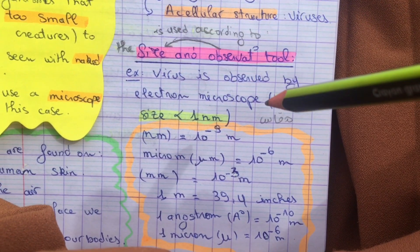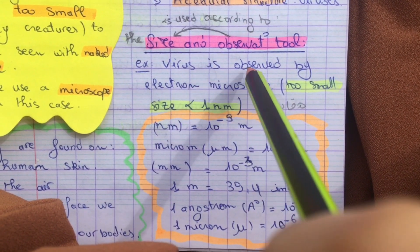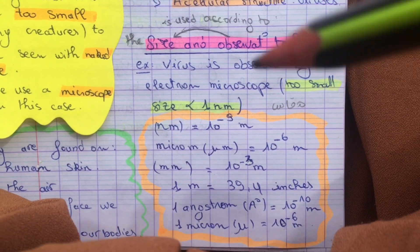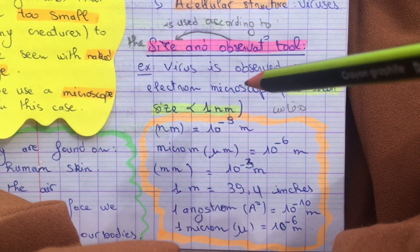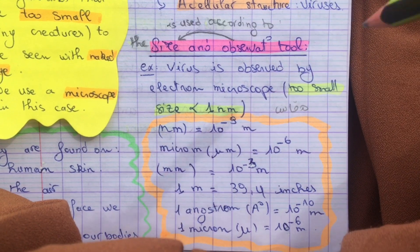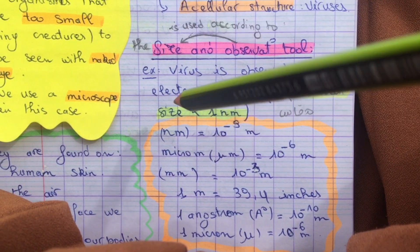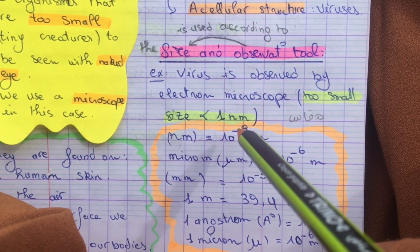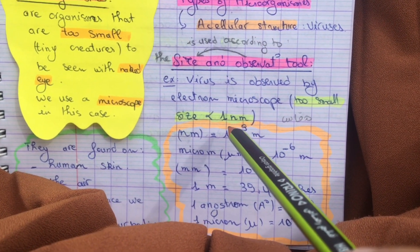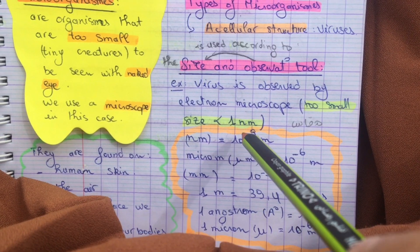Regarding size and observation tools: viruses are observed by electron microscope, using electronic transmission, because they are too small to see otherwise. The size of micro-organisms is less than 1 nanometre — the nanometre being 10⁻⁹.